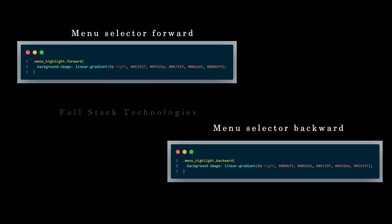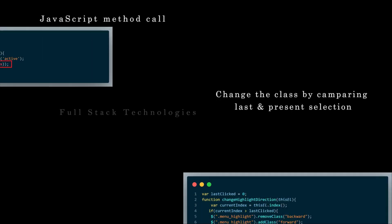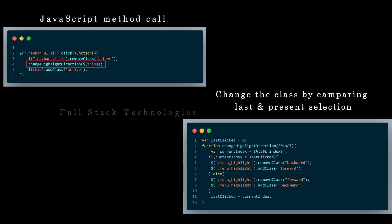Set the background color as per the direction of the menu selection, which is handled by setting two different classes — 'forward' and 'backward' — using JavaScript.